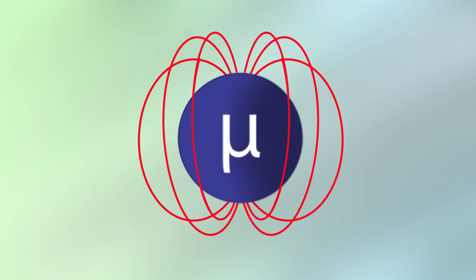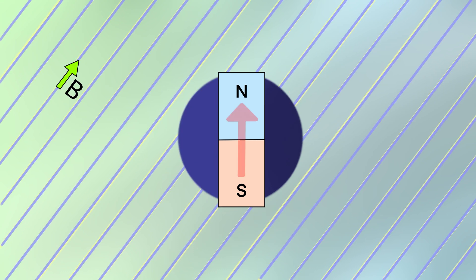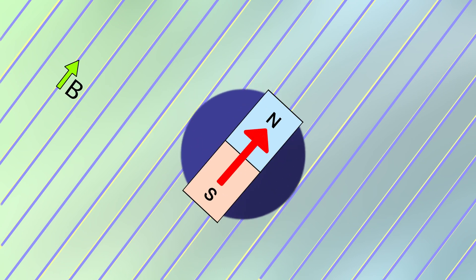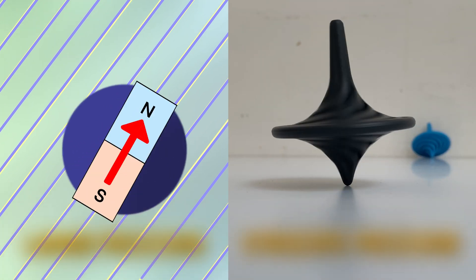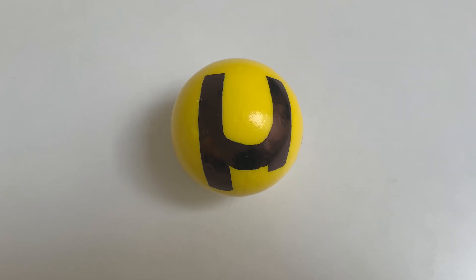We've been studying the properties of these muons in a magnetic field. The spin of a muon — think of it as a bar magnet — tries to align itself with the external magnetic field, but ends up wobbling instead, much like our spinning top. But quantum mechanics is weird.